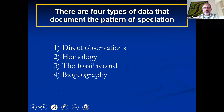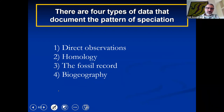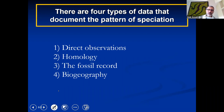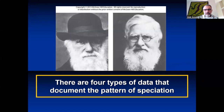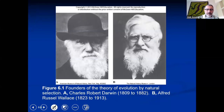There are four types of data that document the pattern of speciation: direct observations, homology, fossil records, and biogeography. I will talk about all four of them, each one of them.